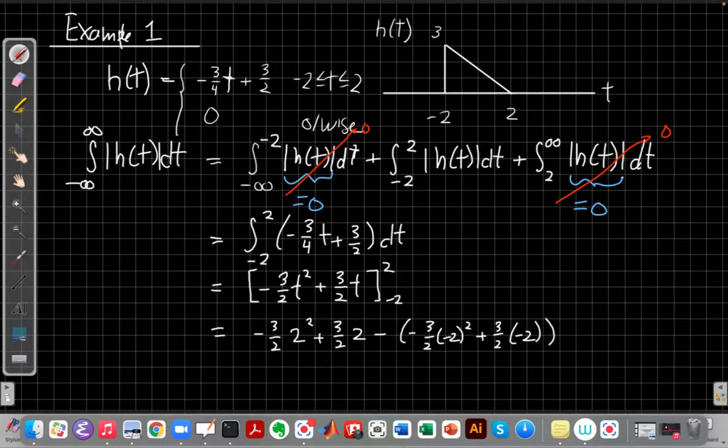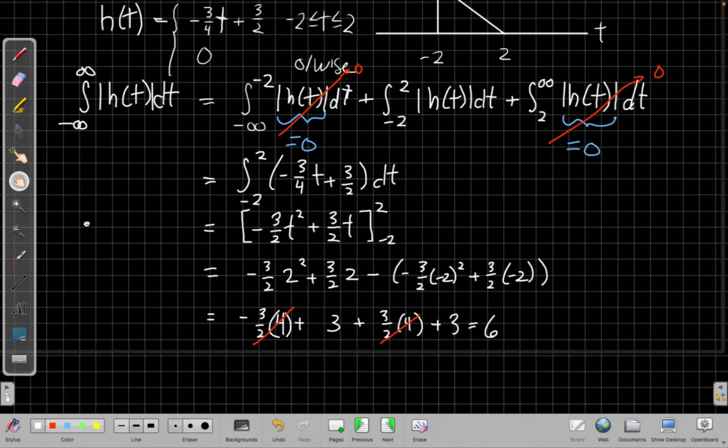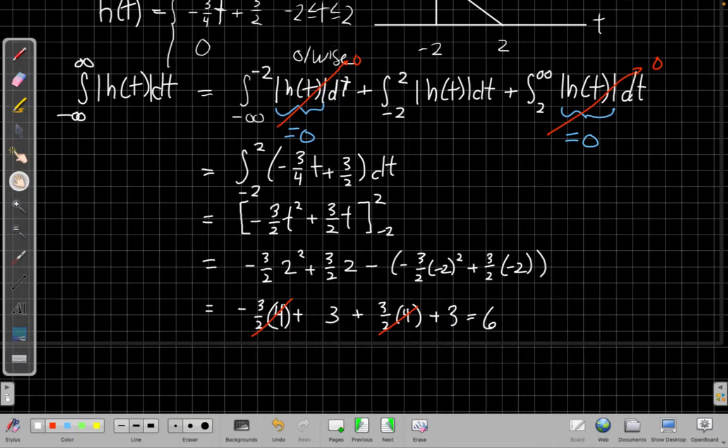So let me simplify this a little bit doing some basic arithmetic. When I've simplified it like this, it makes it clear that I've got a minus three halves times four and a plus three halves times four, so I can cancel those out. And I have a plus three, and the minus two and the minus sign here became a plus, so I have another plus three. So altogether, this thing will be six. And because six is less than infinity, that tells me the system is stable.